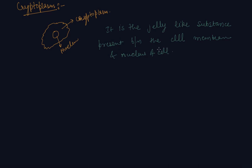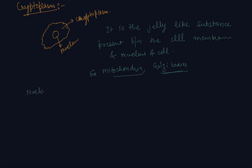Various other components or organelles of cells are present in the cytoplasm — for example, mitochondria and Golgi bodies. We will discuss these in further classes. For Class 8, this much information about cytoplasm is sufficient.